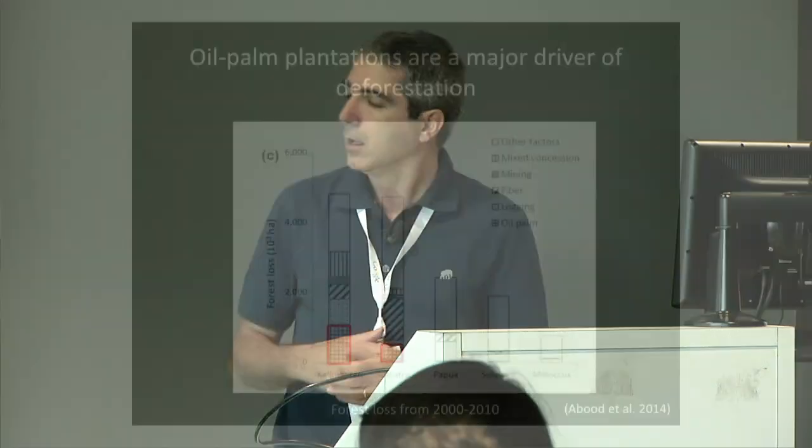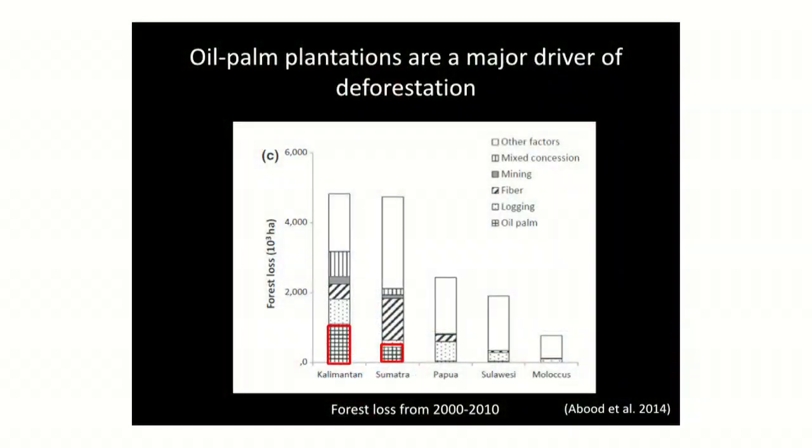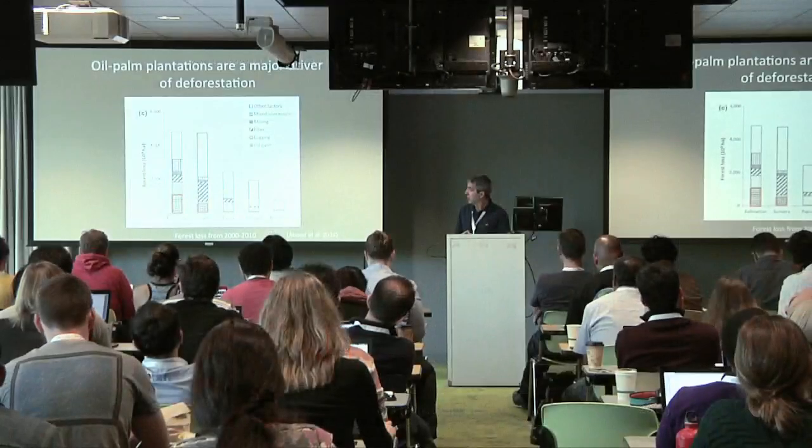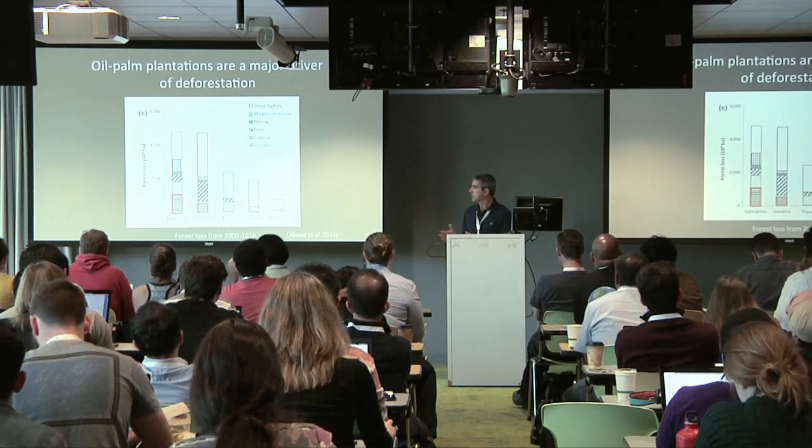If you look at deforestation in Kalimantan and Sumatra, where orangutans live — those are the apes that I work a lot on — you can see these red boxes represent the total amount that oil palm contributes to deforestation. It's quite high in Kalimantan, and it's higher than any other major driver on Sumatra. It's second behind the pulp and paper industry. So this leads to a lot of deforestation, and that has impact on forest biodiversity and on the animals there.